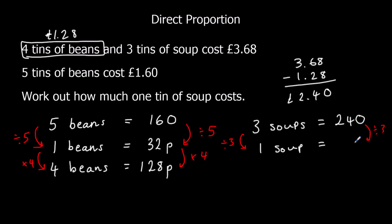So 1 tin of soup. 24 over 3 is 8, add on the 0, so it's 80p. So 1 tin of soup costs 80p.